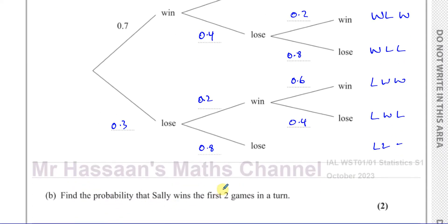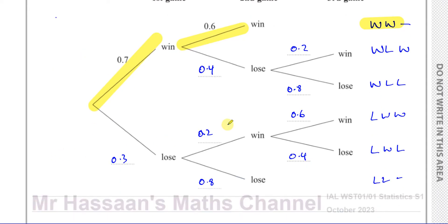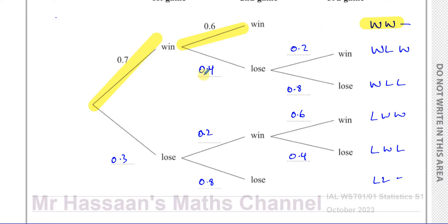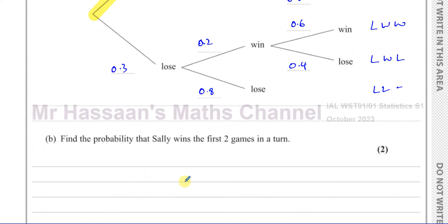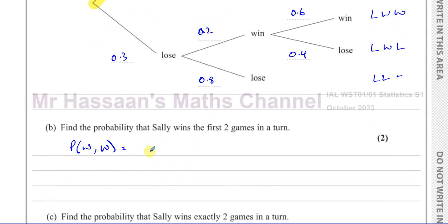Part B: find the probability that Sally wins the first two games in a turn. There's only one outcome for that: win-then-win. You multiply along the branches to find the probability of an outcome. So P(win, win) = 0.7 × 0.6 = 0.42. That's the answer to part B — very simple.